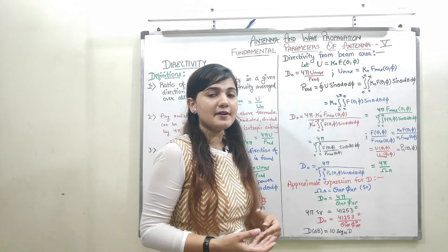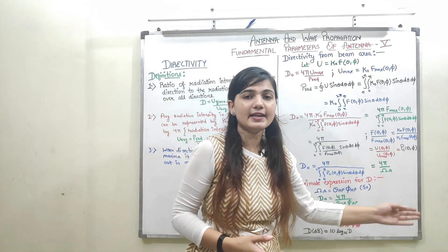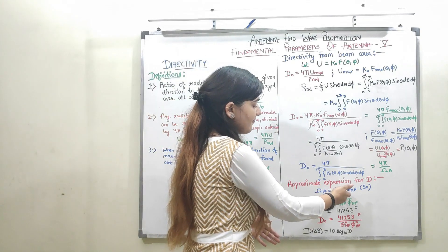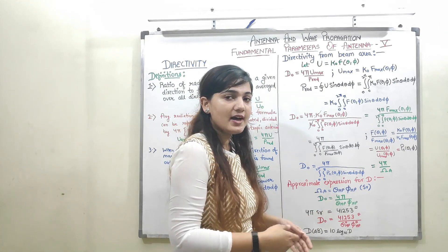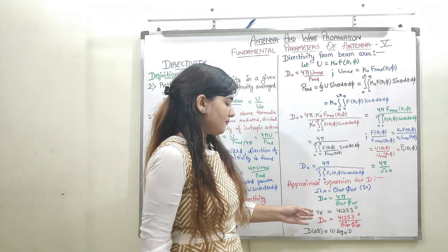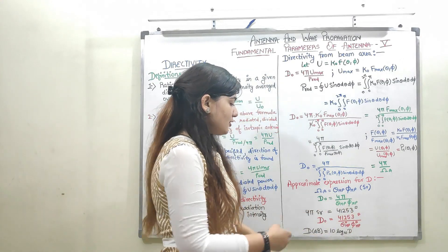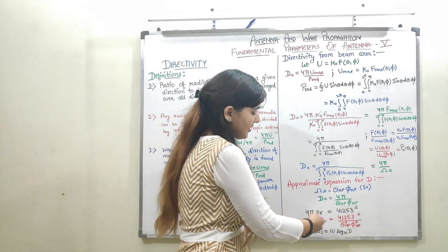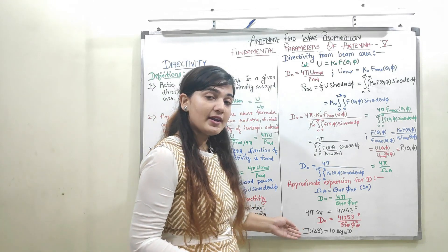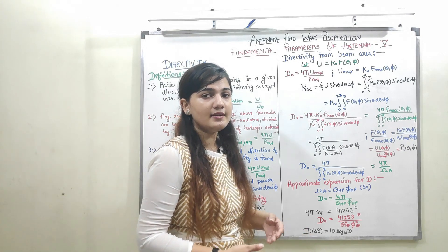Now I will find the approximate expression for directivity. The beam area can be represented in terms of half-power beamwidths: beam area equals θ_HP multiplied by φ_HP, the half-power beamwidths in the θ and φ directions respectively. So D₀ equals 4π upon θ_HP · φ_HP. Since 4π steradians equals 41,253 square degrees, converting to degrees gives D₀ = 41,253 / (θ_HP · φ_HP). To convert directivity to decibels, use the formula 10 log₁₀(D).